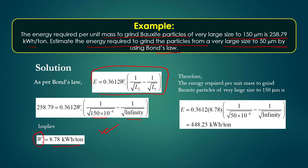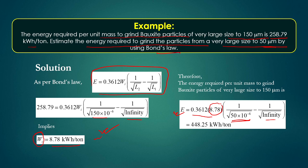Now, what is the energy required to grind the same bauxite from a very large size to 50 micrometers? Using E = 0.3612·Wi·(1/√L2) with Wi = 8.78 and L2 = 50 × 10^-6 m (since feed is infinite, 1/√L1 = 0), after calculation the energy comes out as 448.25 kWh/ton.